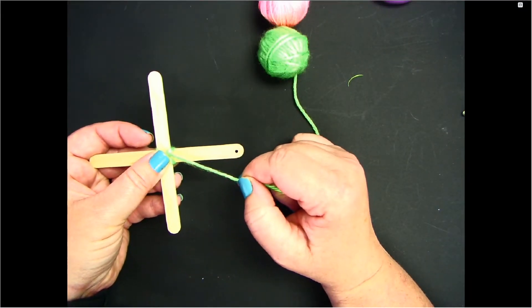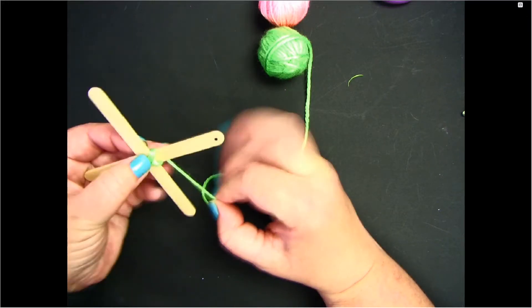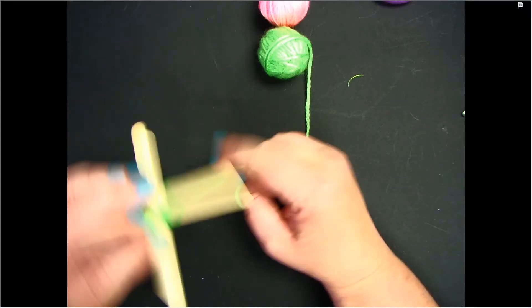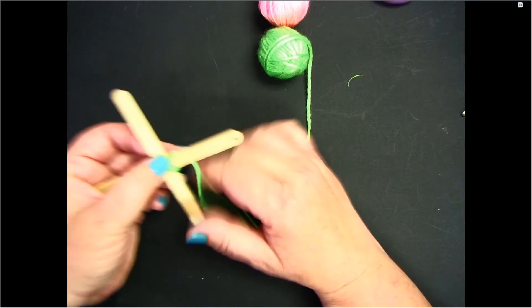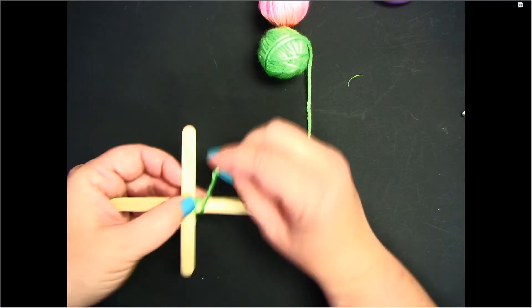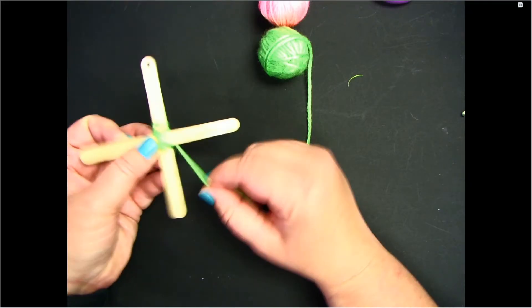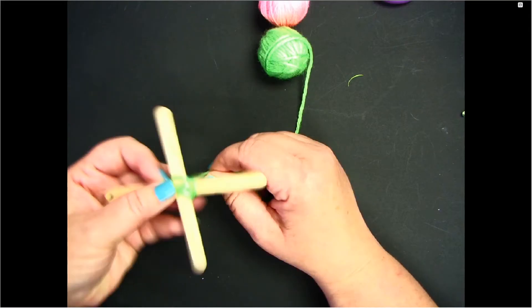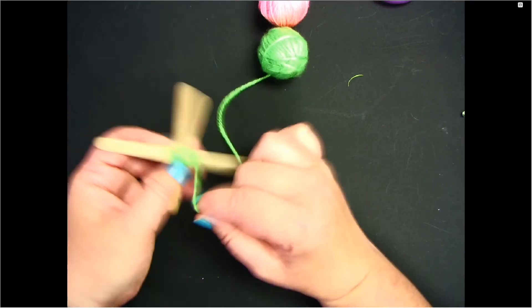Now I'm going to start on the popsicle that I added the dot to, and you see that my yarn is coming from under that stick. I'm going to wrap the yarn from under, over the stick, and then it goes back under to the next popsicle stick. I'll go over, under, to the next popsicle stick, over, under, to the next popsicle stick. And I keep this pattern going on and on.